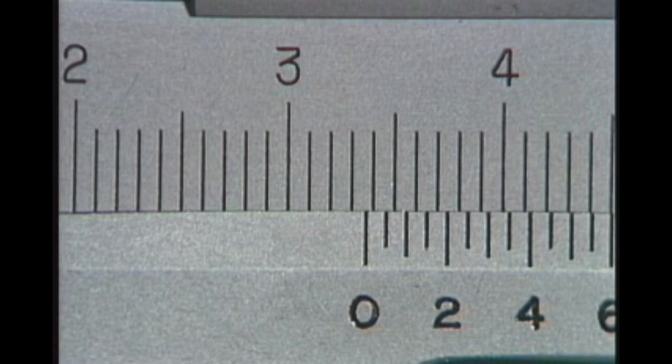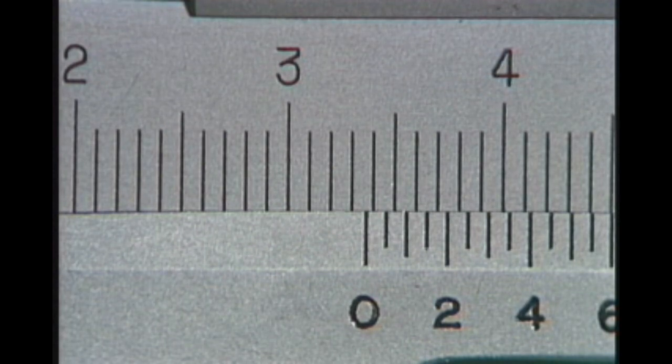If we enlarge it, we can see that the zero graduation on the vernier is between 33 and 34 millimeters on the caliper body. This means that the size of this object is in the 33 millimeter range.